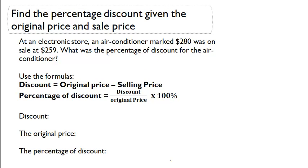Let's look at the formulas that we're going to need for this problem. The discount is going to equal the original price minus the selling price. And the percentage of discount will equal the discount divided by original price times 100%. Let's first calculate the discount.